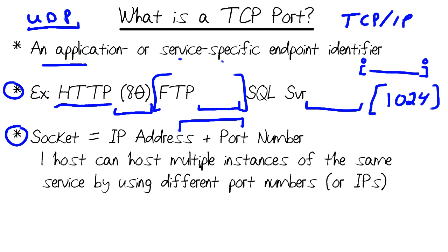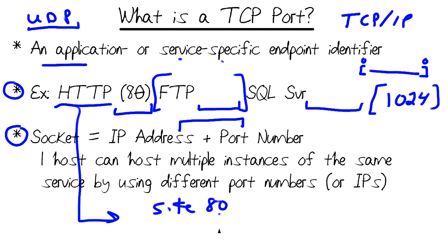That means a single host can host multiple instances of the same service by using different port numbers. For instance, we can set up a web server that has site one listening on the default port of port 80, and another website on the same server, same IP address, but listening on a different port.